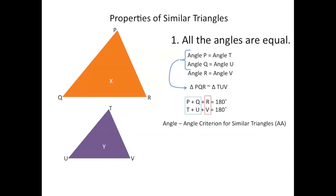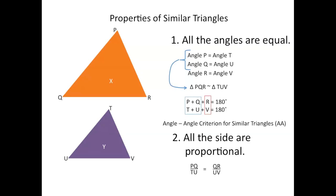The second property we're going to need is that all the sides of similar triangles are proportional, which means that the corresponding sides can be written as ratios to one another that equal each other. For example, writing the ratios of the lengths of triangle X versus triangle Y, we get PQ over TU equals QR over UV, which equals PR over TV. Both these concepts we're going to need later on when we start our proof.